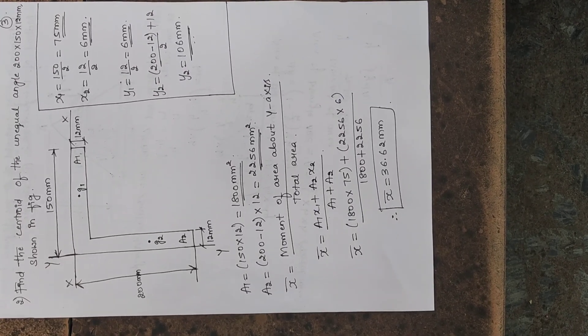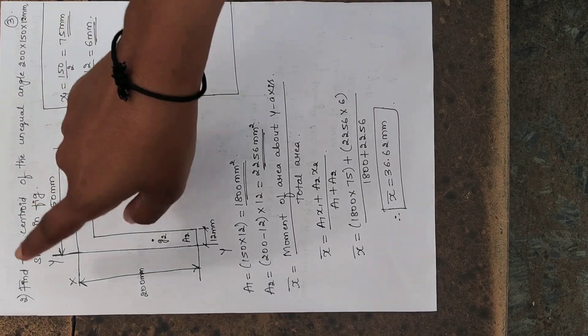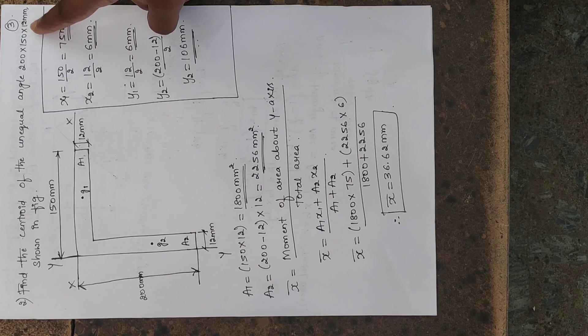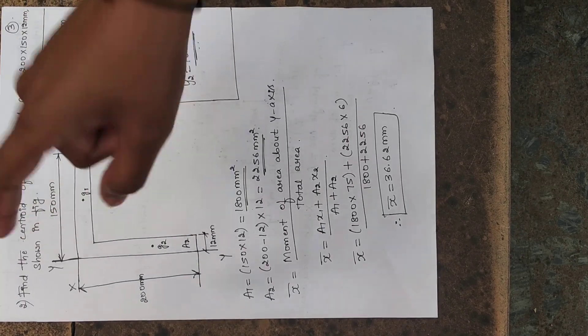Let us start with a simple problem. The question is, find the centroid of the unequal angle 200 by 150 by 12 mm as shown in figure.